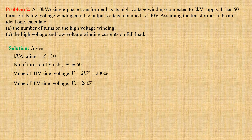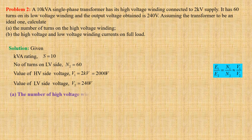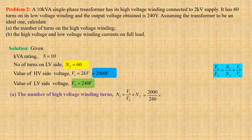For a transformer, E1/E2 equals N1/N2, which is approximately equal to V1/V2. The number of high voltage winding turns N1 equals V1/V2 × N2, that is 2000/240 × 60, which gives us 500 turns.